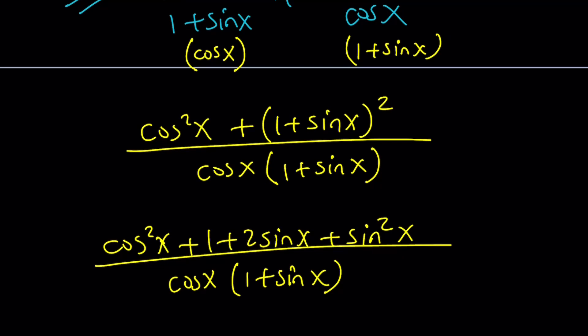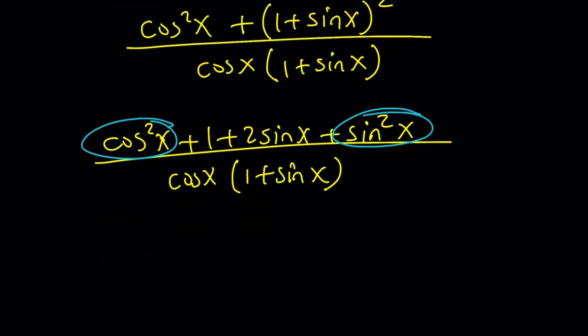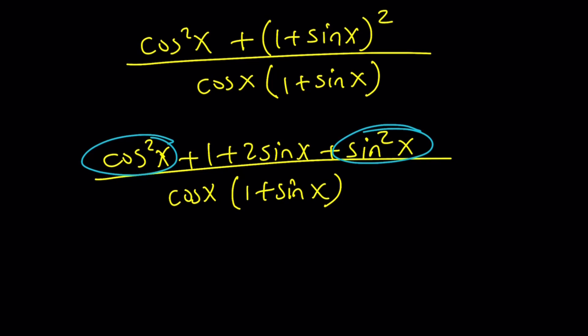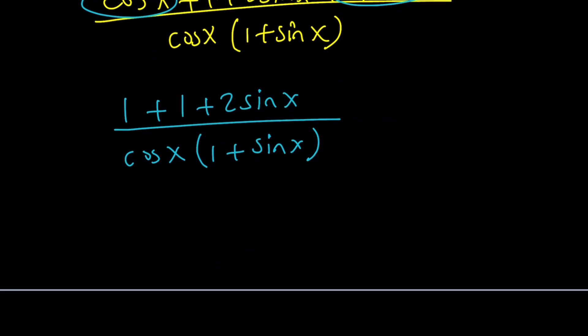And now, what you should do is look for identities. Try to simplify this as much as possible. Does 1 plus 2 sine x have a meaning? Does 1 plus sine squared? No. But cosine squared plus sine squared has a meaning. It has a huge meaning, actually. That's one of the most important formulas. It's 1 from Pythagorean identity. So it's 1, another 1 plus 2 sine x, divided by cosine x, multiplied by 1 plus sine x. So I think I'm going to show you a graph at the end that will explain what we're doing. Hopefully that will help you a little bit more.